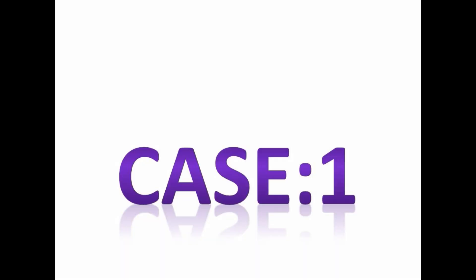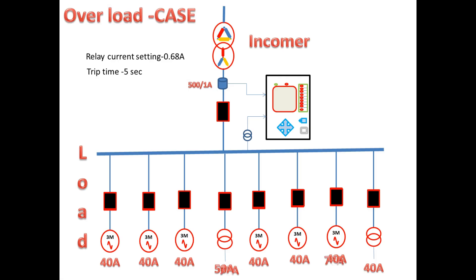Case 1: we consider all the feeders running in full load condition. Suddenly two feeders got overload, one transformer and one motor. Due to this, load current increases and reaches 380A. In this case the incomer should give chance to these two outgoing feeders. They should trip first or their load should be normalized.